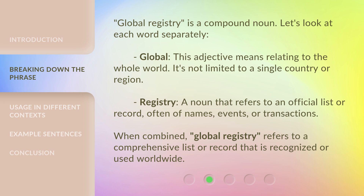Global Registry is a compound noun. Let's look at each word separately. 'Global' is an adjective meaning relating to the whole world — not limited to a single country or region. 'Registry' is a noun that refers to an official list or record, often of names, events, or transactions. When combined, 'Global Registry' refers to a comprehensive list or record that is recognized or used worldwide.